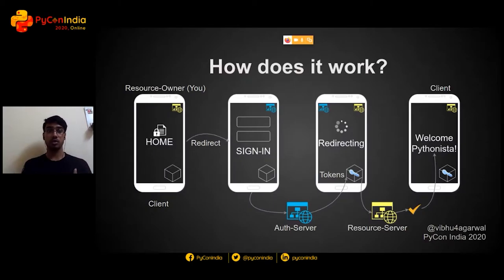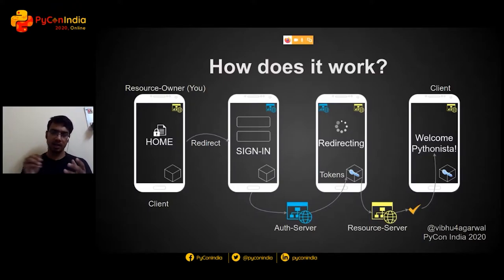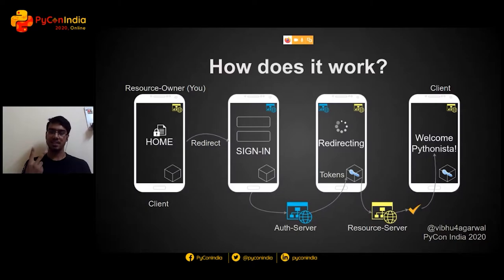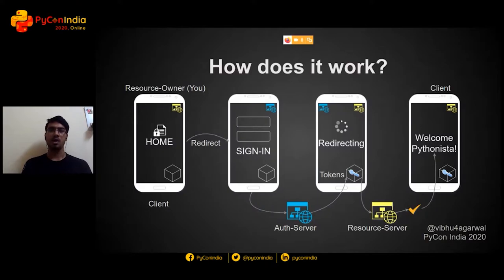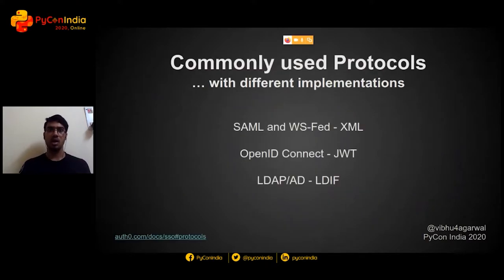Now let's add some technical terms. You are the resource owner asking for a protected resource. You go to the client, which redirects you to the sign-in page — the authorization server front end. The authorization server checks your details and issues tokens, which are basically the keys. Tokens are of two types: access tokens and refresh tokens. The access token fetches your protected resource and is passed to the resource server, which acts like your Sheets or Docs backend. If the token is valid, you're provided your protected resource back at the client.